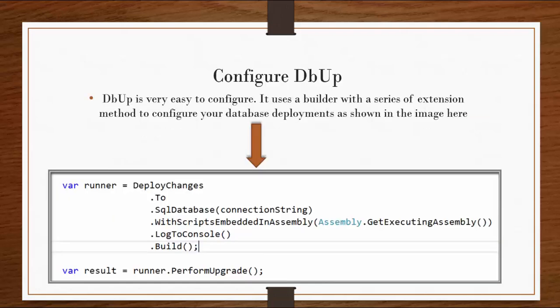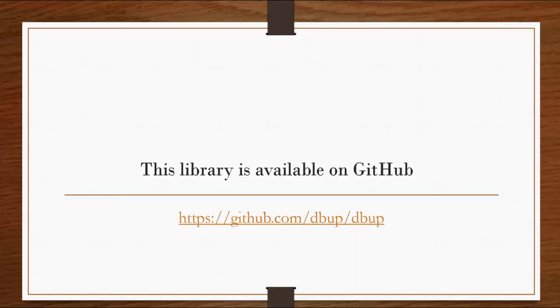So how do you configure DBF? It is very easy. This library provides us a series of extension methods to configure it in our application. You can say this is nothing but a set of instructions which we need to tell to this library — hey, I want to publish this database script on this particular database and on this server. We will go through all these methods in the demo part. As I said earlier, this library is open source, so it's available on GitHub. You can go through the link, follow this library, and contribute something of your own.